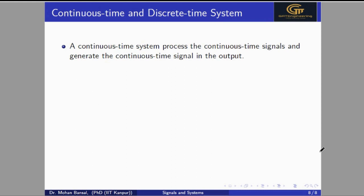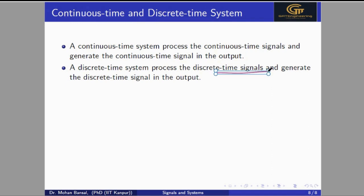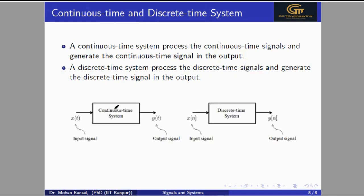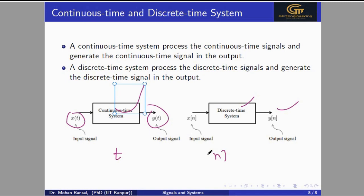Now we discuss the types of systems. One is the continuous time system and another is the discrete time system. A continuous time system processes continuous time signals and generates a continuous time signal at the output. Similarly, a discrete time system processes discrete time signals and generates discrete time signals at the output. In a continuous time system, input is x(t) and output is y(t), where t represents continuous time using round brackets. In a discrete time system, input is x[n] and output is y[n], where n is a discrete integer number represented using square brackets.